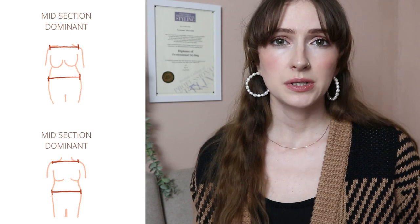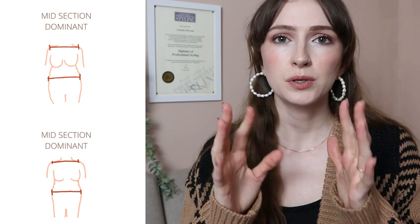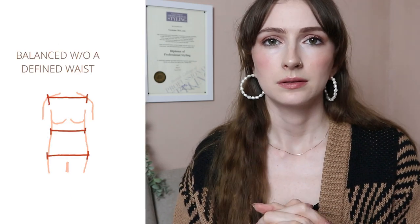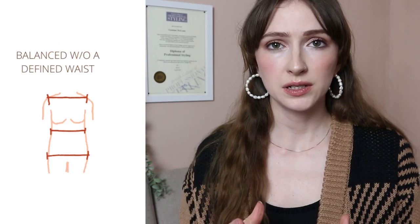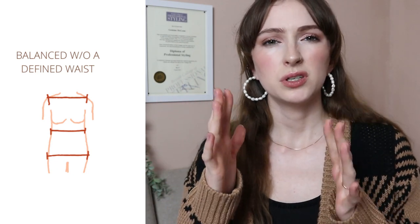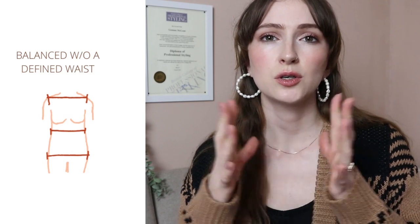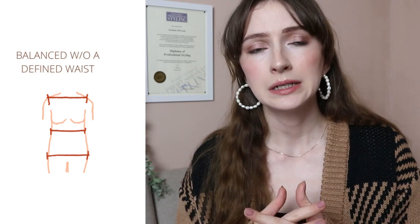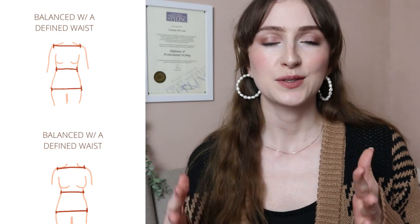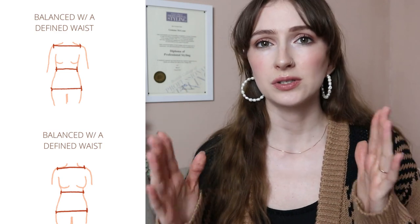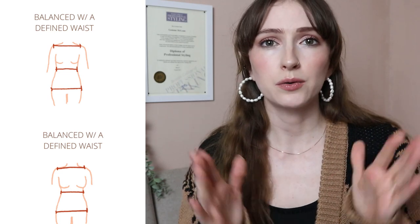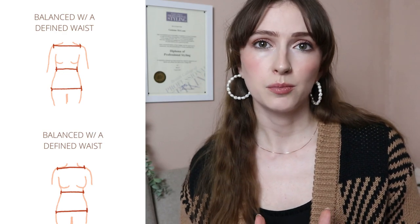The third type is midsection dominant — you could be quite even everywhere else, but your midsection carries a little bit more weight. Next, we have balanced without a defined waist: your hips and shoulders are pretty much even, but you don't really have a defined waist — you could be quite athletic, just straight up and down. And finally, balanced with a defined waist: your shoulders and hips are quite even in width, but you have more of an hourglass shape and your waist nips in a little bit more.